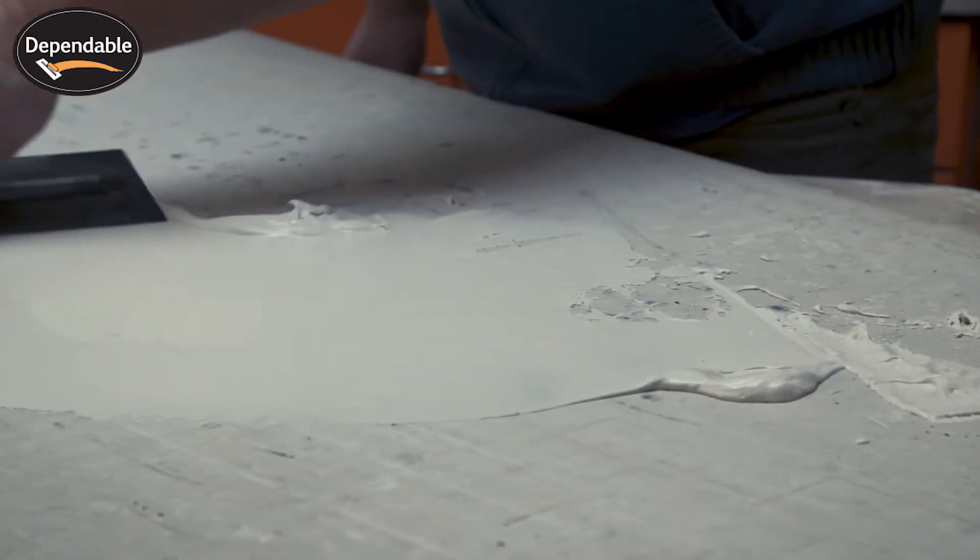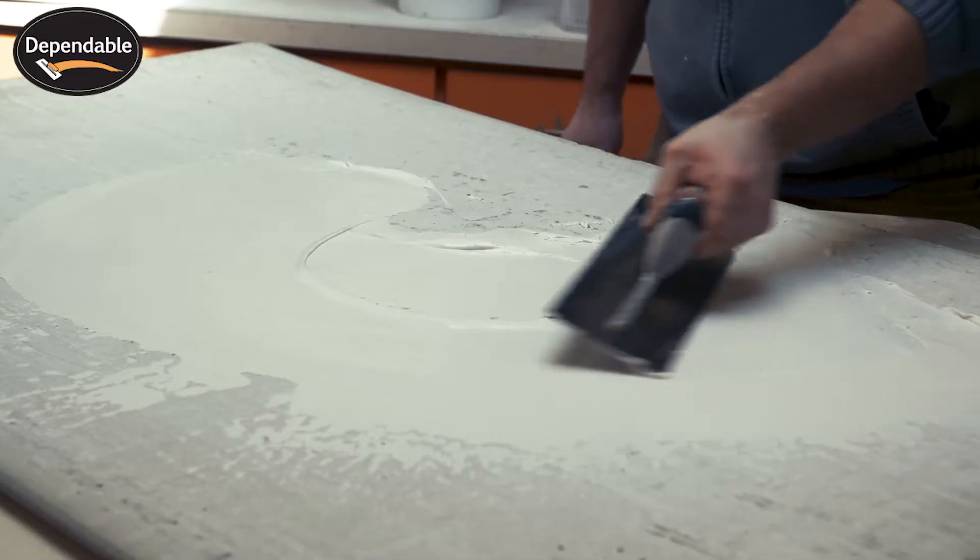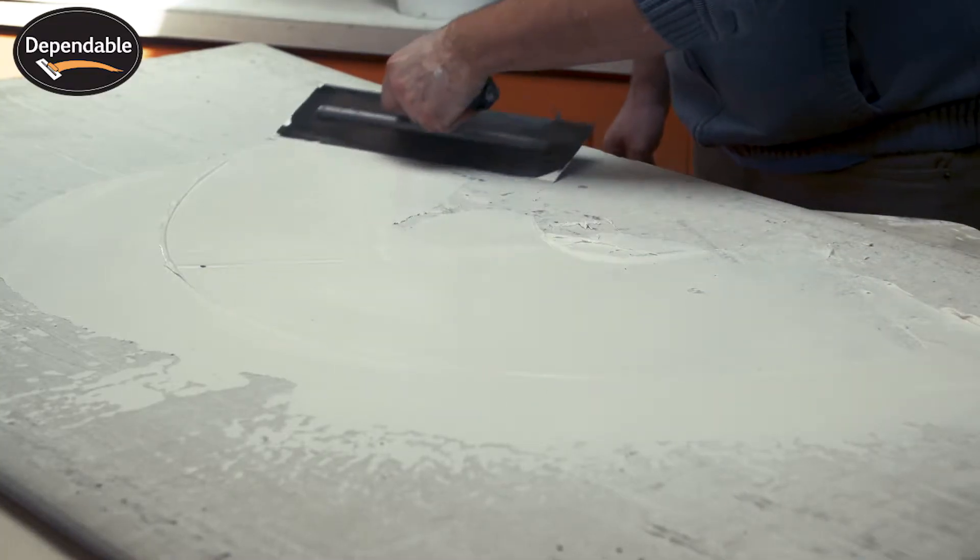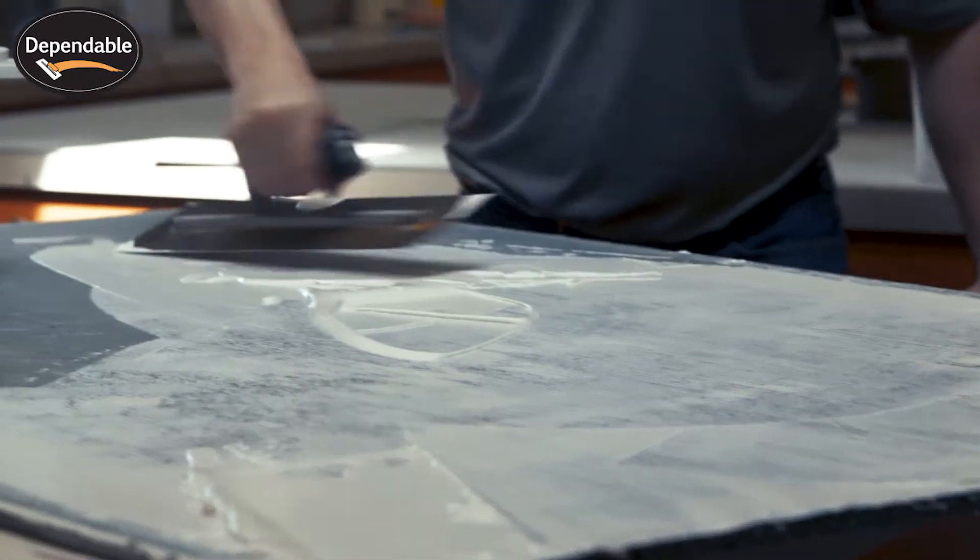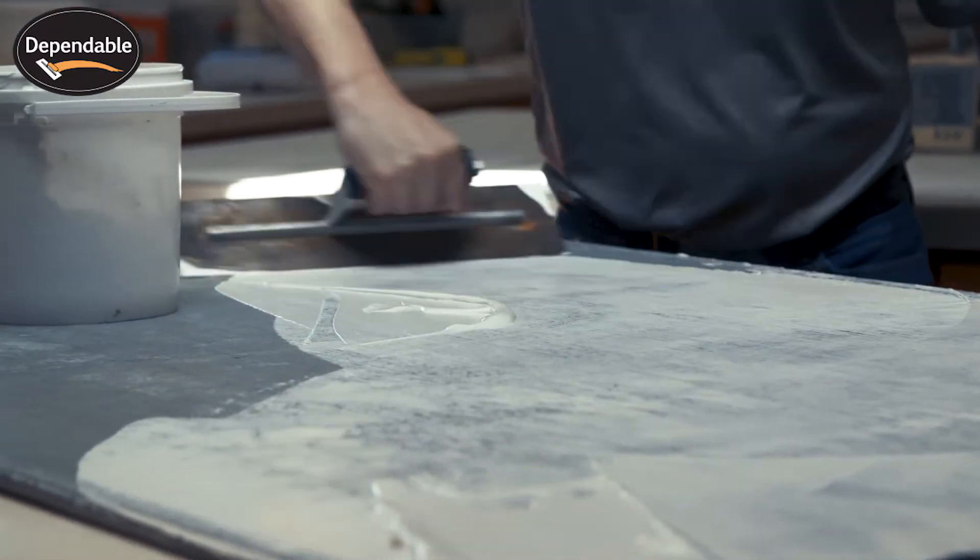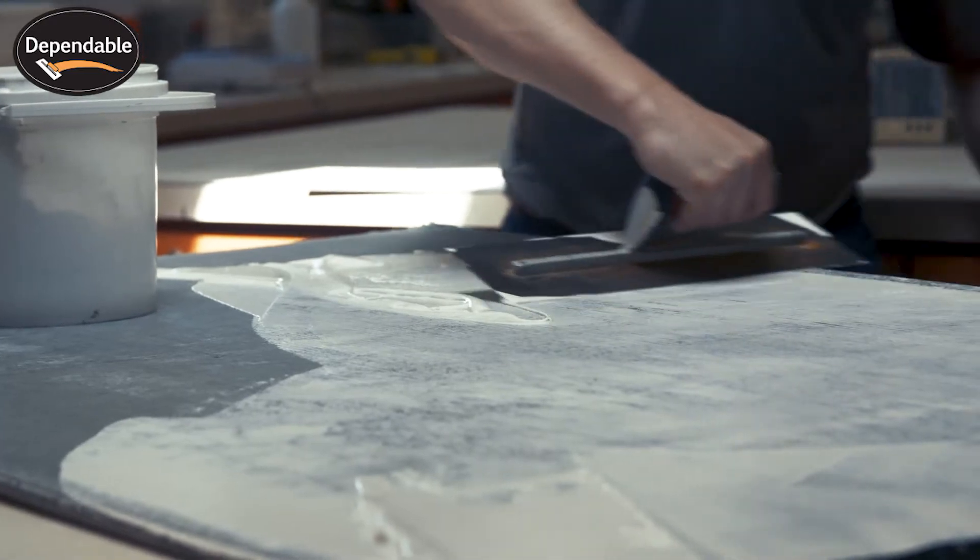Polyskim's working time is optimized to ensure adequate placement time and fast drying so the installation of the finished flooring can proceed quickly. Polyskim is the optimal choice for repairing or smoothing gypsum floors.